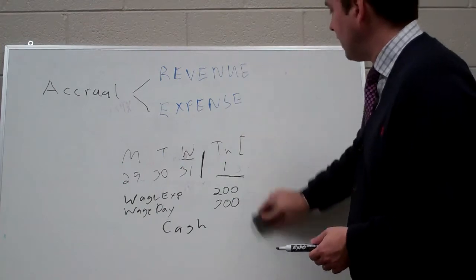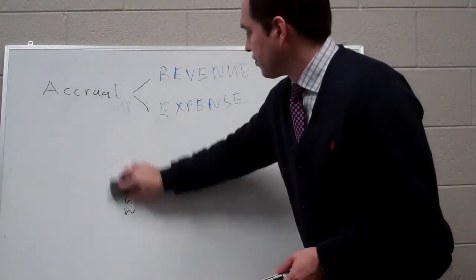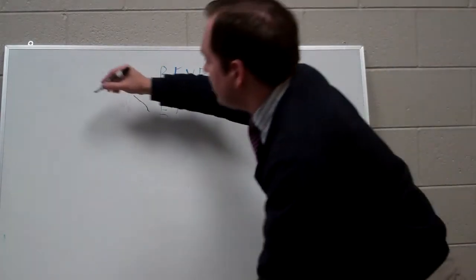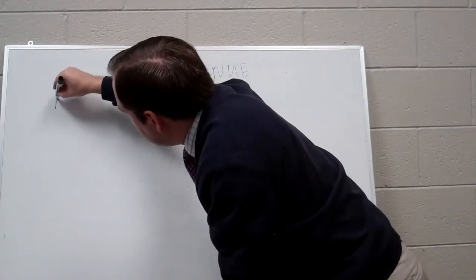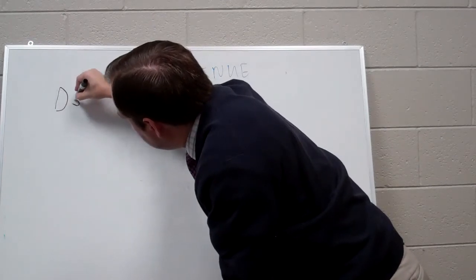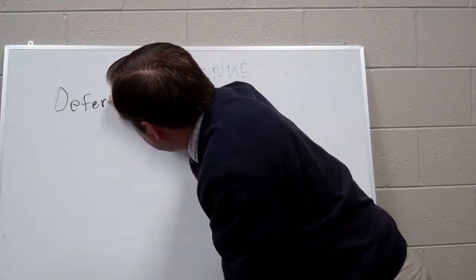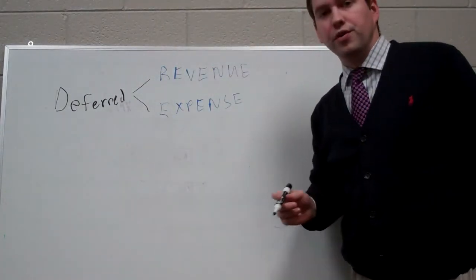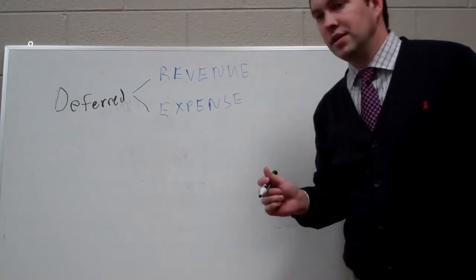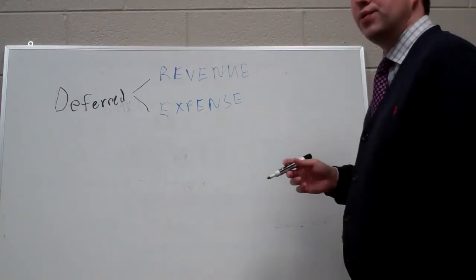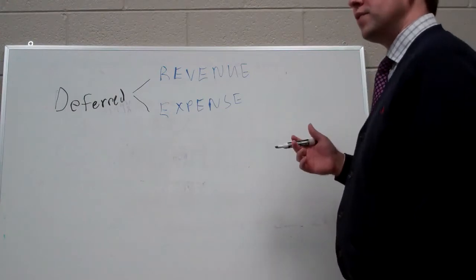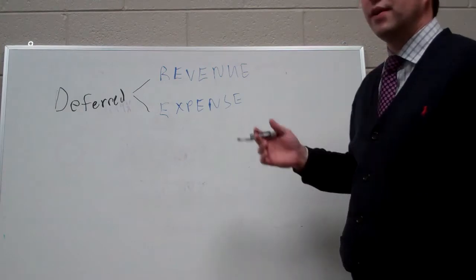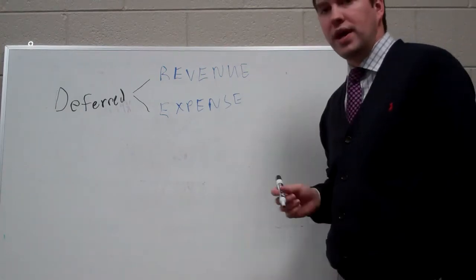Now let's spend some time looking at deferrals. And just like accruals, we can have deferred revenues and deferred expenses. Now, deferred revenues create a new type of account for us. That happens when we've got cash up front that we have to record, but we can't record revenue yet because we haven't earned it.